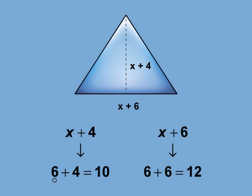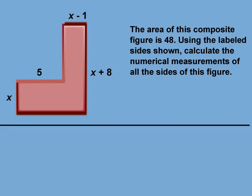Let's look at a final example. The area of this composite figure is 48. Using the labeled sides shown, calculate the numerical measurements of all the sides of this figure.